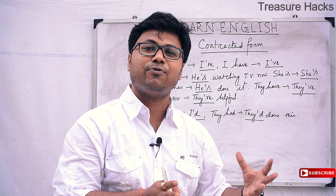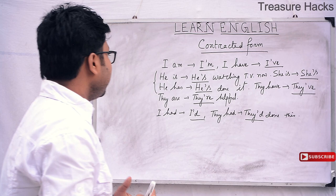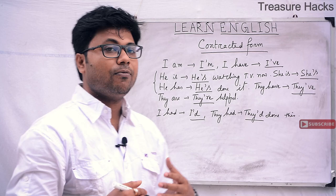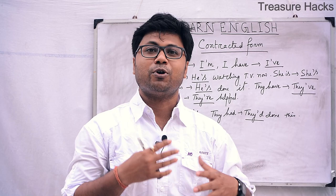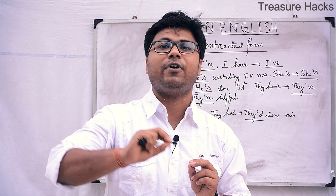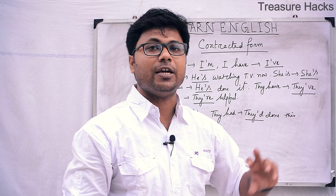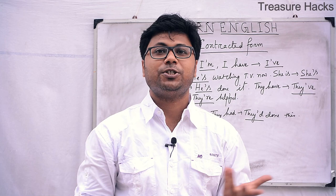'They are' in contracted form is 'they're'. For example: They're helpful. And 'they have' in contracted form is written as they apostrophe VE — 'they've'. For example: They've done it. They've told me the story.